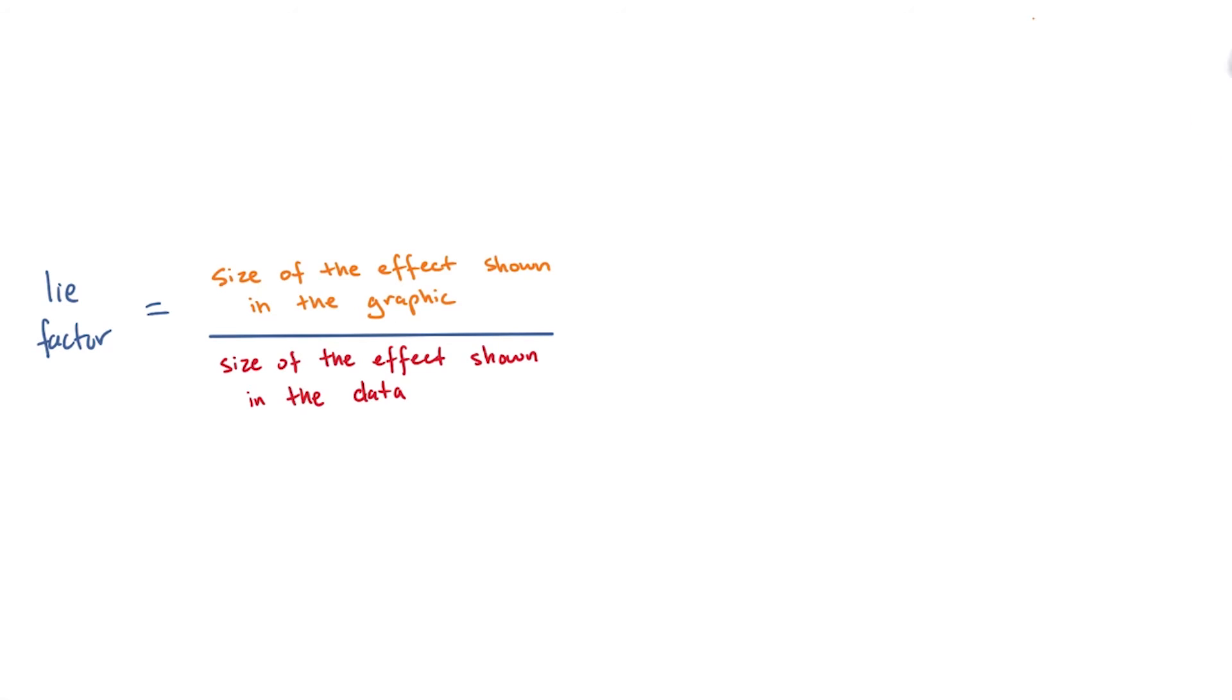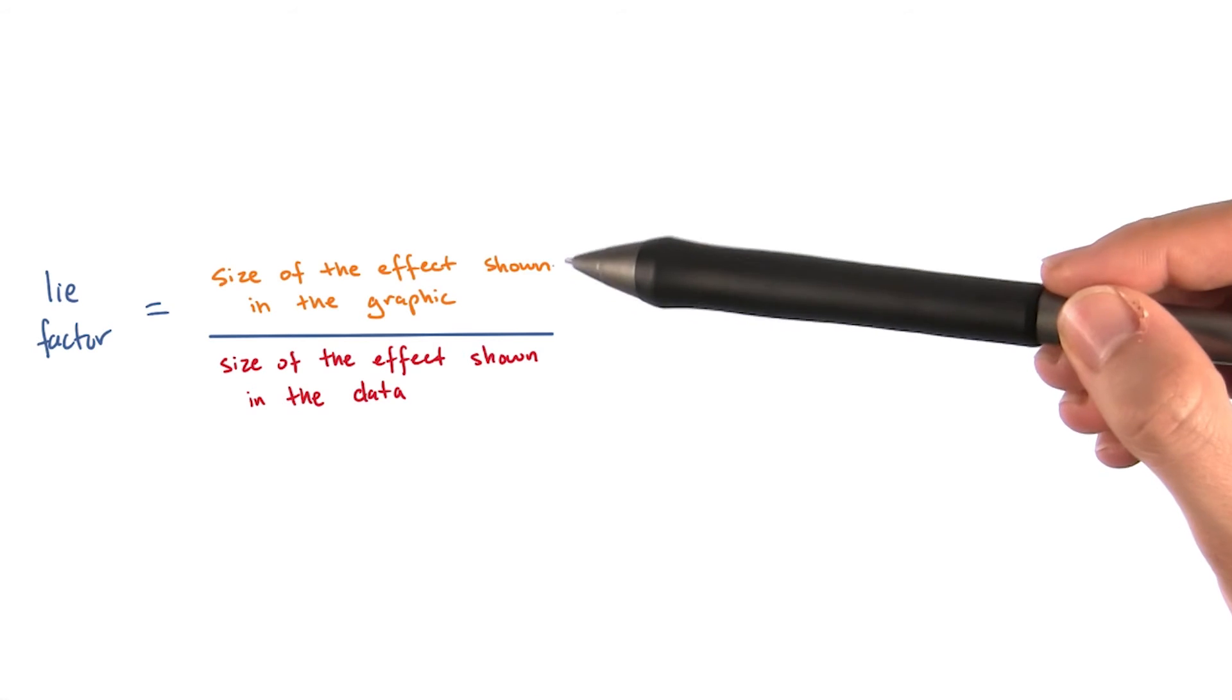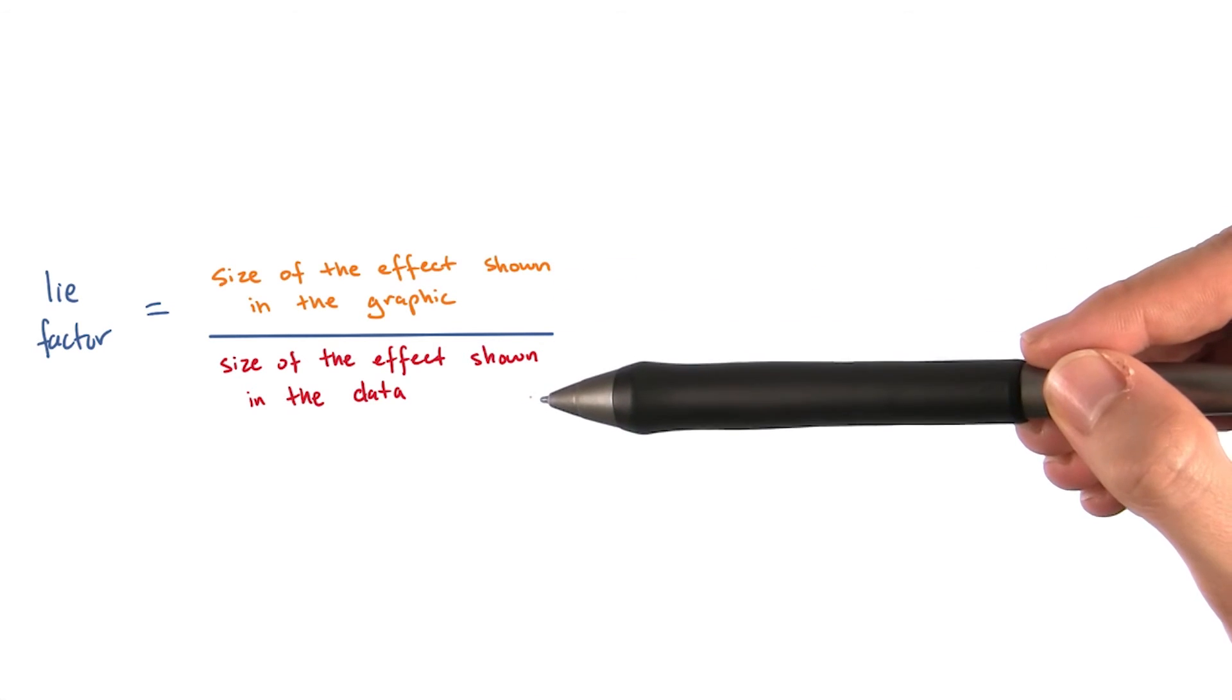Now that we know what lie factor is, how do we calculate it? Recall that lie factor measures the difference between the effect shown in the graphic and the effect seen in the data.